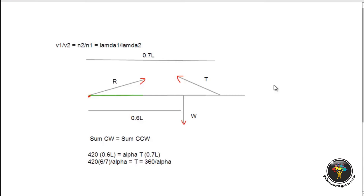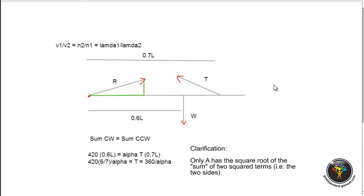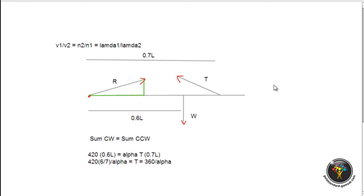To find R in newtons, use the Pythagorean theorem. You square the two component sides and take the square root to get R. Because R equals the square root of two squared sides, the answer can only be A, since only A has the square root of two squared terms.